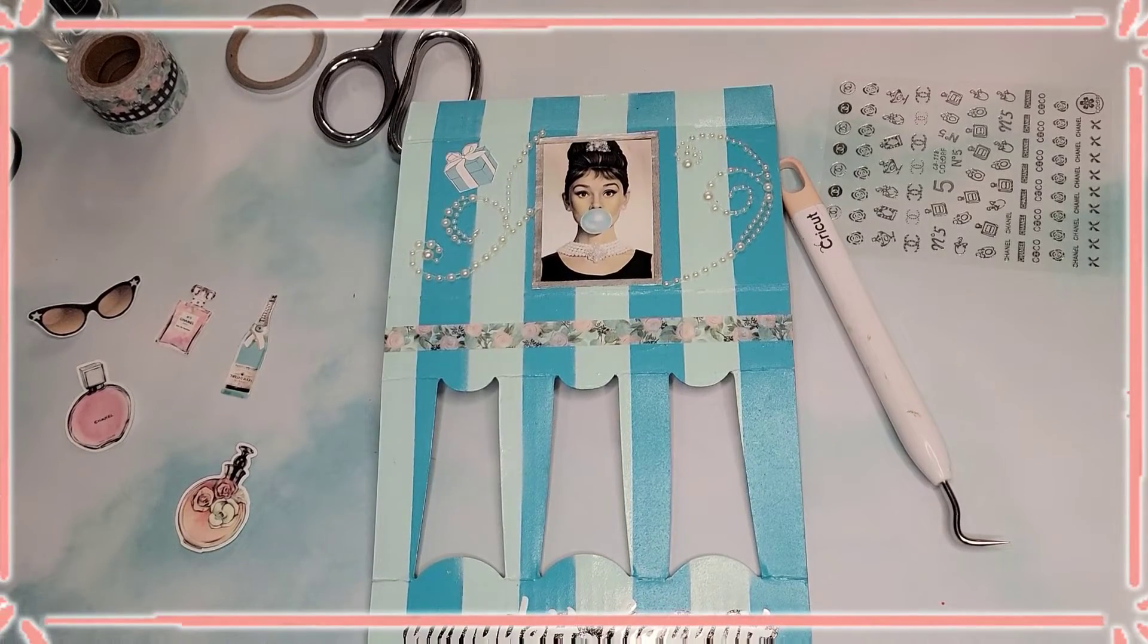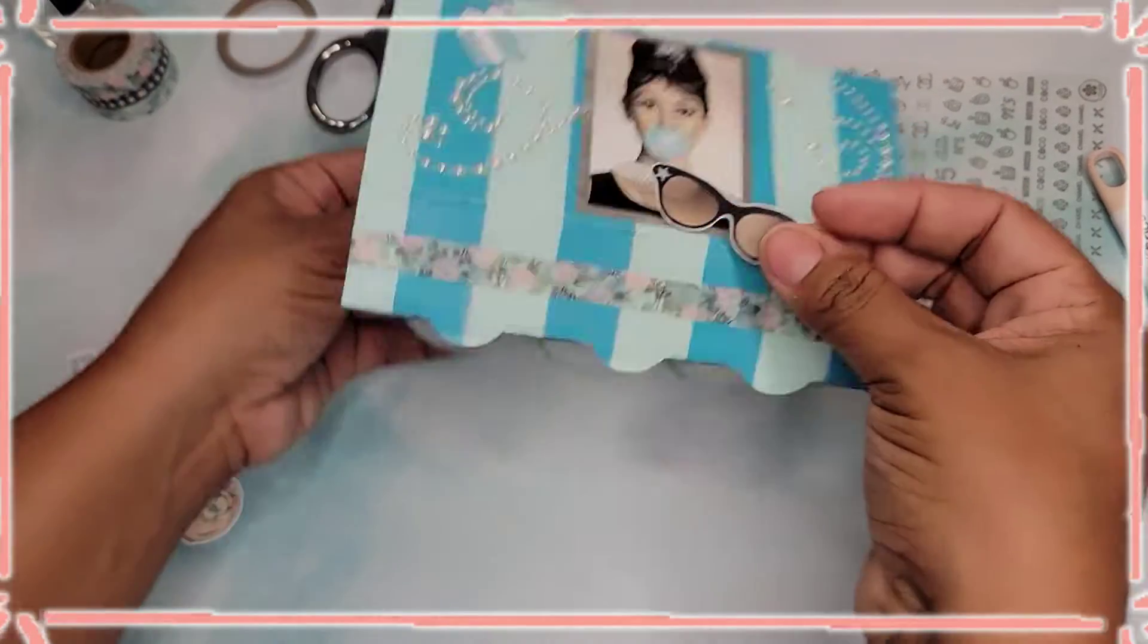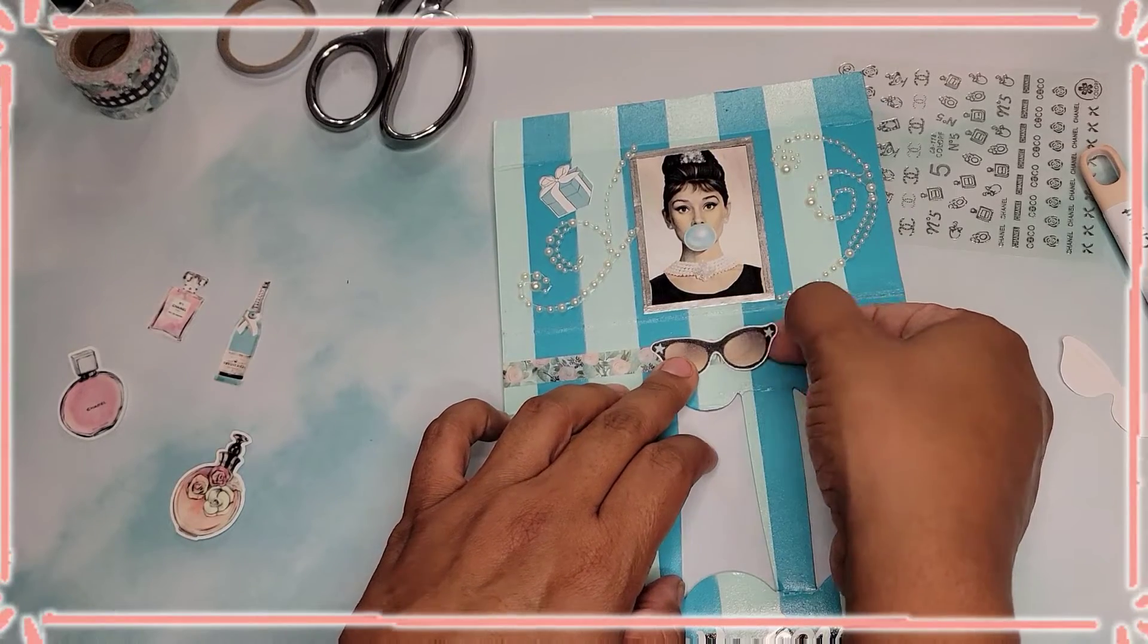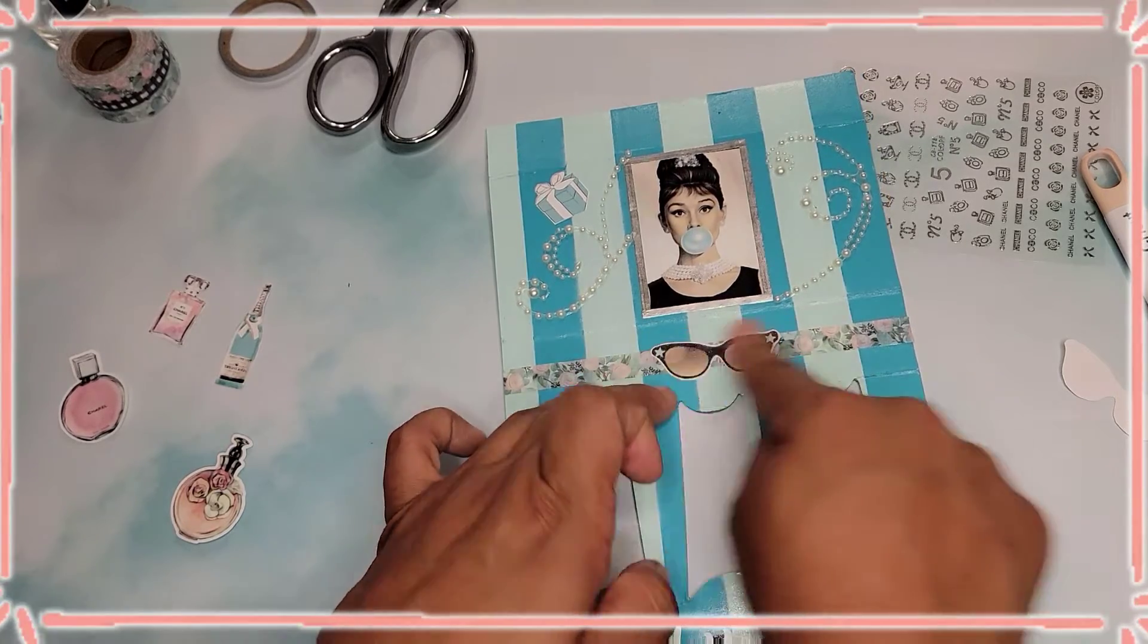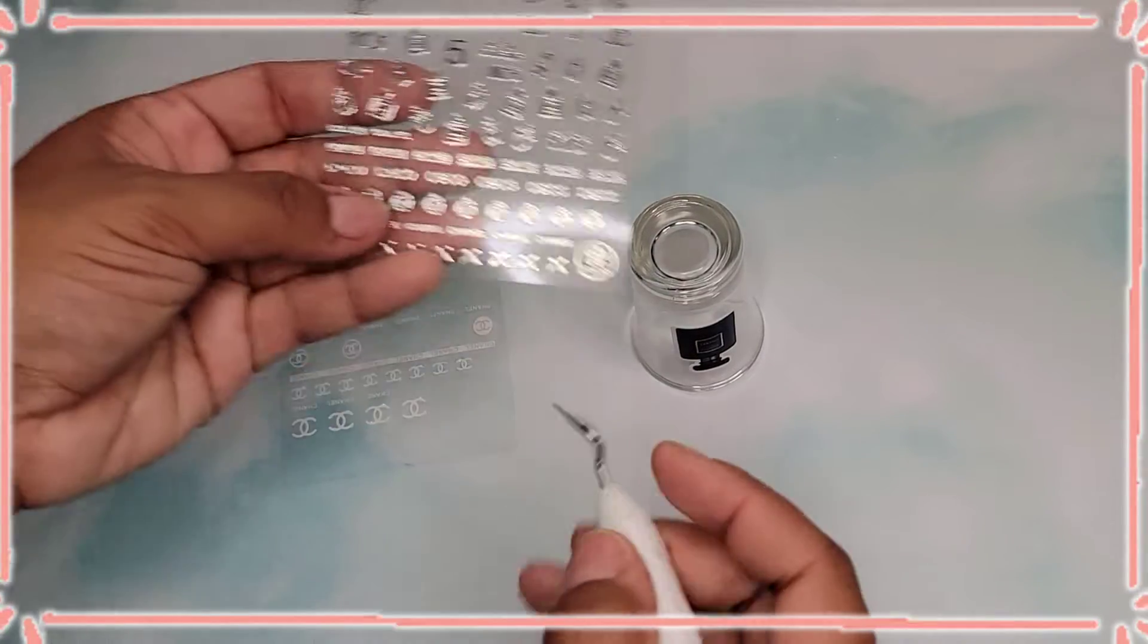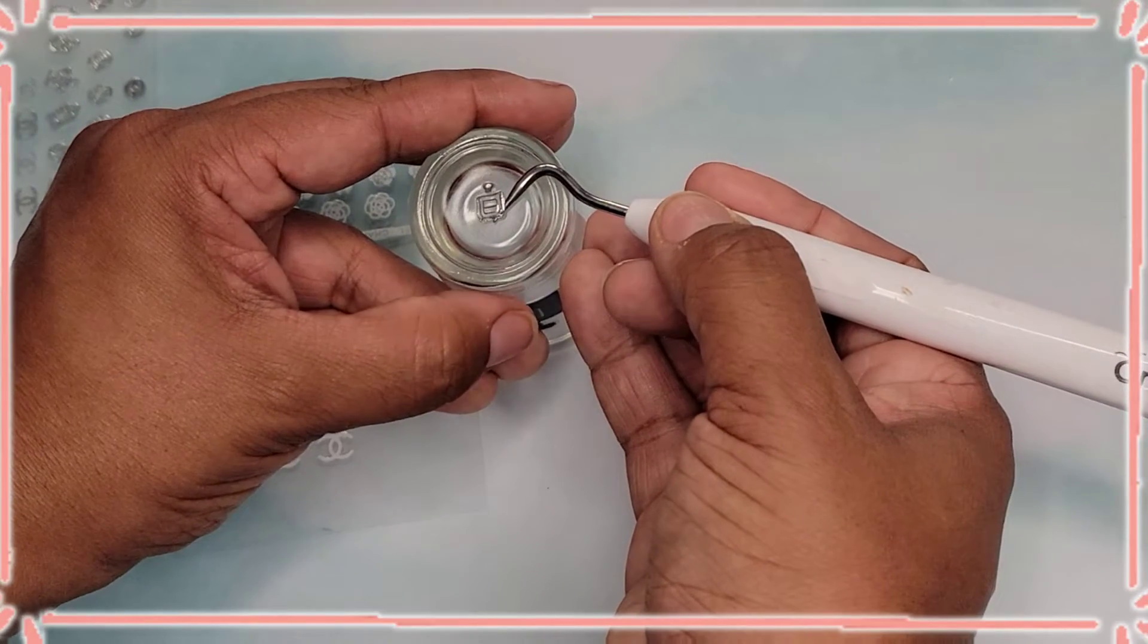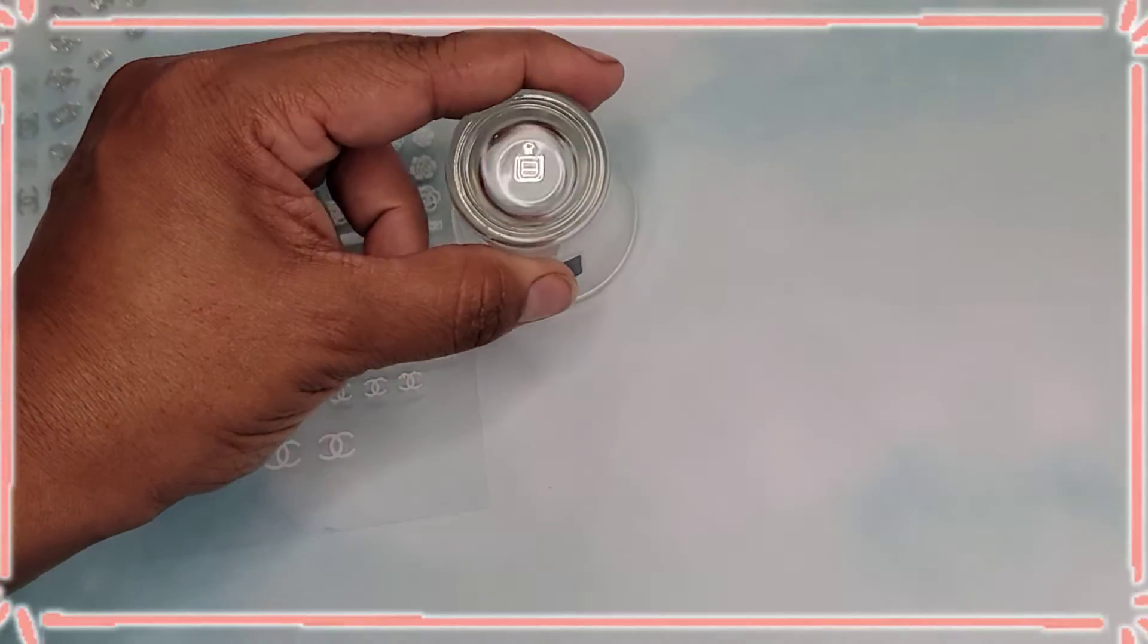I think I want the sunglasses to be this direction. Let's go ahead and take the sunglasses off. And we're going to put them right in the center underneath Audrey. I like that. I want to go ahead and put one of these chanels on the bottom. I'm thinking we do this cute little one right here. Right in the center. Look at that. That is cute.